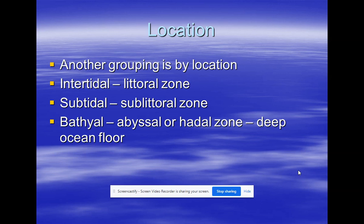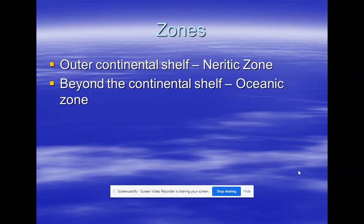Another grouping is based on tides. If you're living between the high and low tide, they call that intertidal or the littoral zone. If you're always submerged, you're in the subtidal zone — sub means below, so the sublittoral zone is always wet. The bathypelagic, abyssal pelagic, and hadopelagic zones are the deep ocean floors. Over the continental shelf is the neritic zone; beyond that is the oceanic zone.